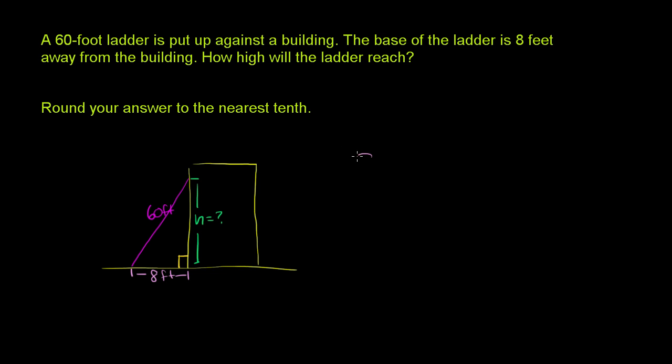So 8 squared plus h squared (h for height) is equal to 60 squared. 8 squared is 64, so 64 plus h squared equals 3,600.